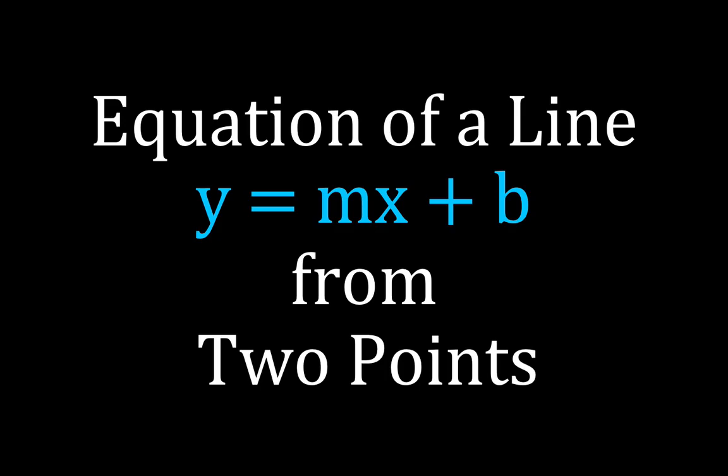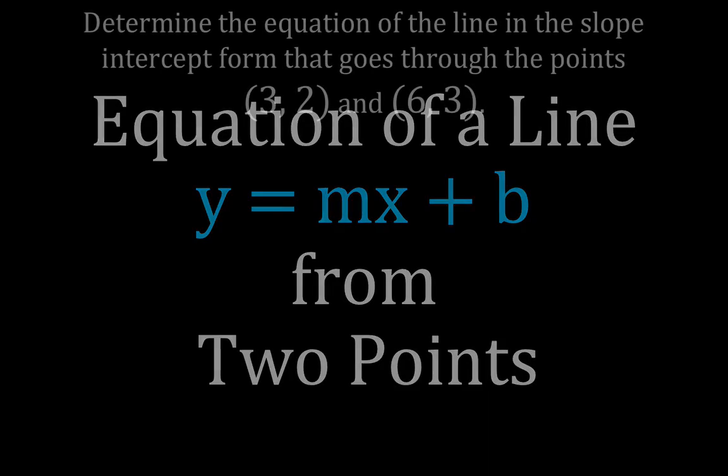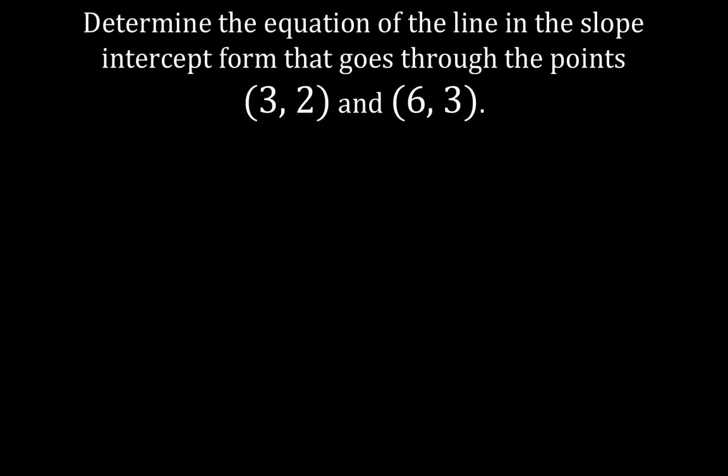In today's video, I'm going to go over how to write the equation of a line in the slope-intercept form y equals mx plus b if we're given two points. I'm going to go through three different examples. Let's get started with the first one: we're going to determine the equation of a line in slope-intercept form that goes through the points (3, 2) and (6, 3).